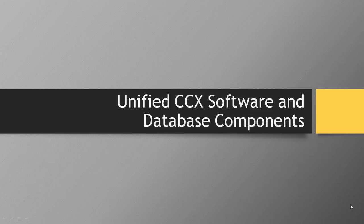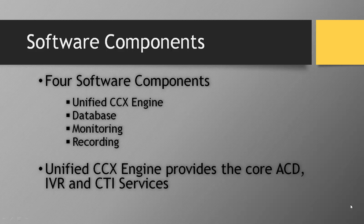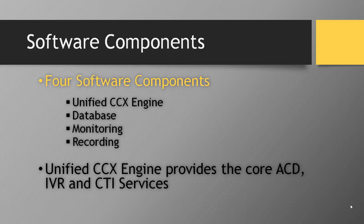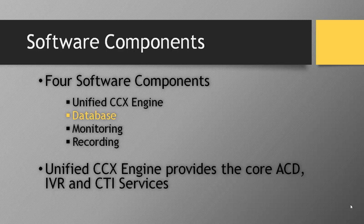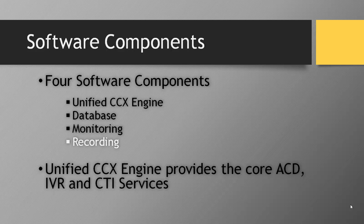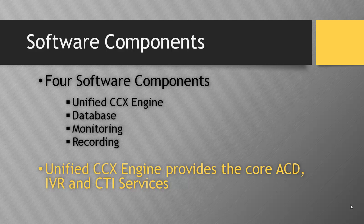With that said, let's go ahead and take a look at the next slide. So there are four software components available with UCCX. The first one is the Unified CCX engine, which is a mandatory component that should be enabled on all the servers in the cluster. The next one is the database component, which should also be mandatory and enabled on all the servers. And the next two are monitoring and recording, which are optional software components that can be enabled or disabled in the cluster.